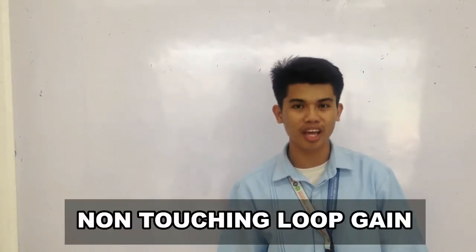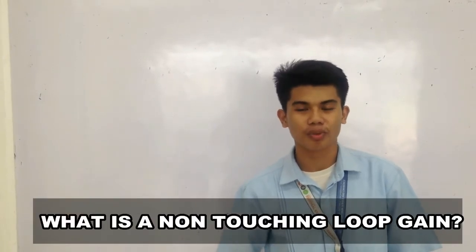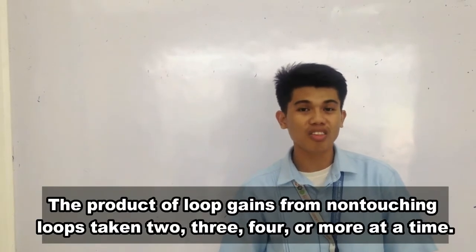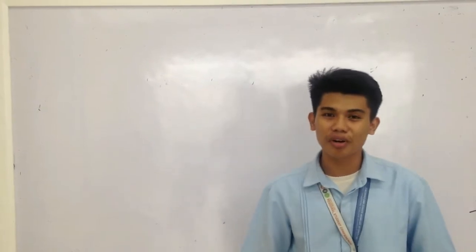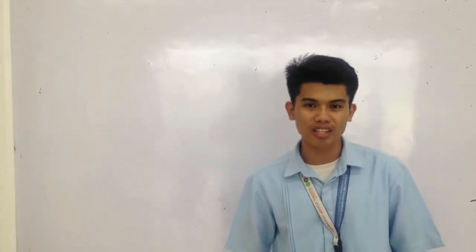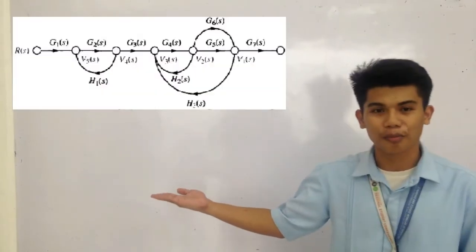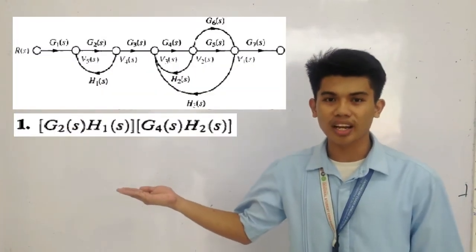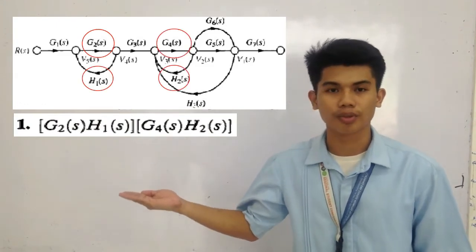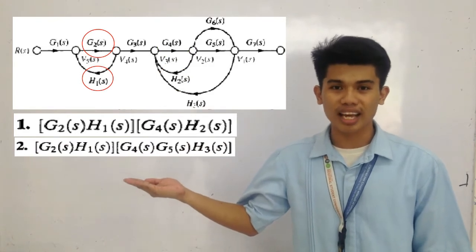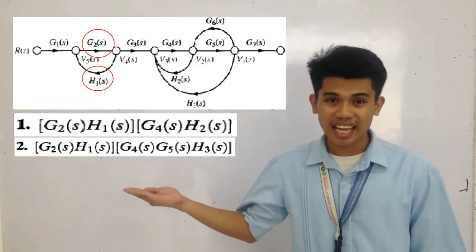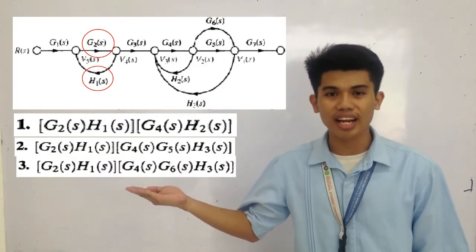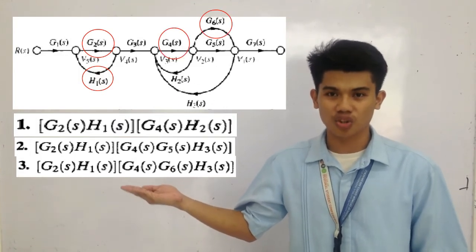The last component of Mason's rule is the non-touching loop gain. What is a non-touching loop gain? It is the product of loop gains from non-touching loops taken 2, 3, 4, or more at a time. In summary, all three non-touching loop gains taken two at a time in the figure are: G2(s)H1(s) and G4(s)H2(s); G2(s)H1(s) and G4(s)G5(s)H3(s); and lastly G2(s)H1(s) and G4(s)G6(s)H3(s).